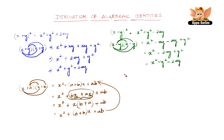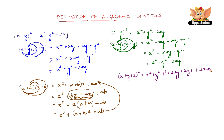Let us look into another one now. It is x plus y plus z the whole square. This is nothing but x square plus y square plus z square plus 2xy plus 2yz plus 2zx. We will see how this comes about. So x plus y plus z the whole square is nothing but x plus y plus z into x plus y plus z.